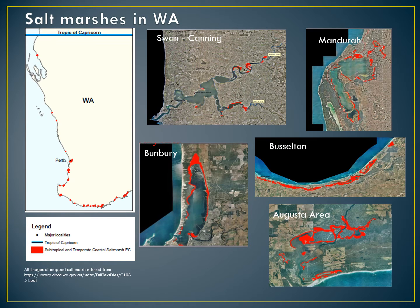Mapping of salt marsh areas of the Swan Coastal Plain has been completed to some extent, but much of it is not readily available, is incomplete, not amalgamated or standardised, which makes comparing data on occurrence and loss of salt marsh difficult.